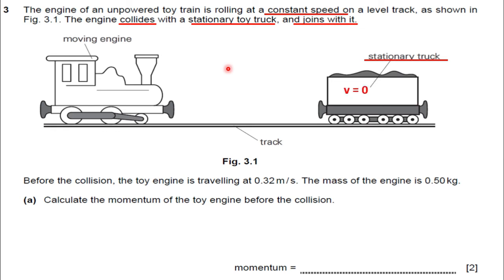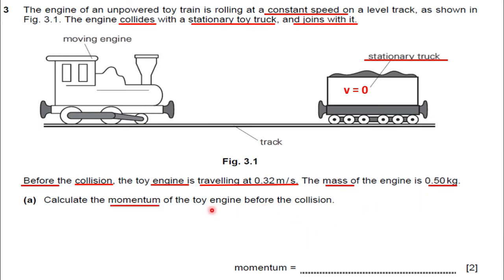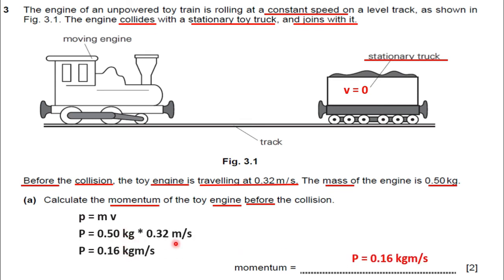In the second part of the question, before the collision, the toy engine is traveling at 0.32 m/s. The important keywords here are: momentum, engine, and before the collision. Now we can do the calculation using P = mv. M is 0.5 kg and V is 0.32 m/s. So momentum equals 0.5 × 0.32 = 0.16 kg·m/s.